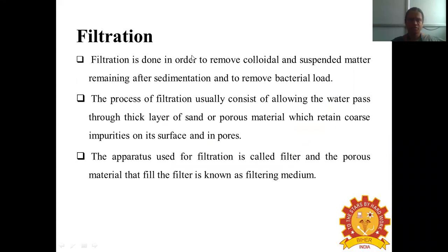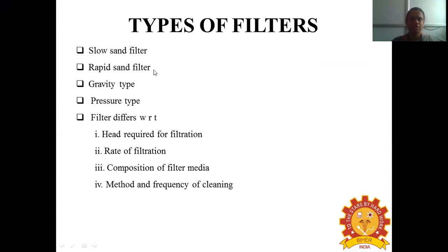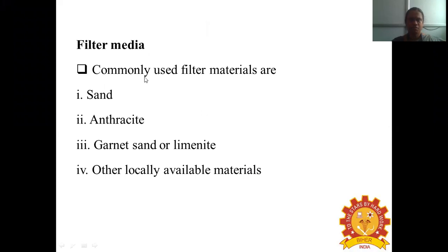Filtration is one of the most important processes in wastewater treatment. It is done to remove colloidal and suspended matter remaining after earlier treatment stages and to reduce the bacterial biological load. The process involves allowing water to pass through a thick layer of sand or porous material which retains impurities on its surface and in its pores. There are different types of filters: slow sand filter, rapid sand filter, gravity type filter, and pressure type filter — varying by head required, rate of filtration, filter media composition, and cleaning method. Common filter media are sand, anthracite, garnet, and other locally available materials.